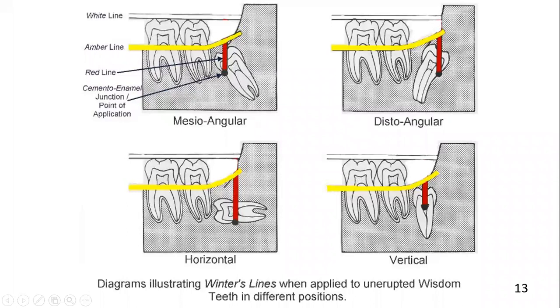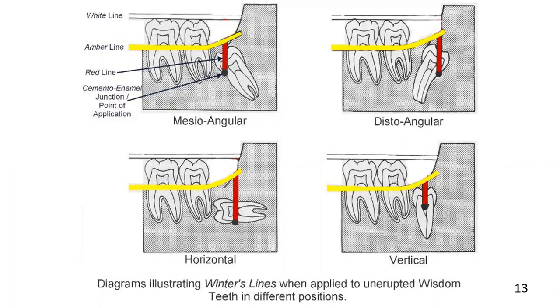So this is all about Winter's lines — the white line, amber line, and red line — and their significance in the assessment and removal of the mandibular third molar. Thank you, and best of luck.